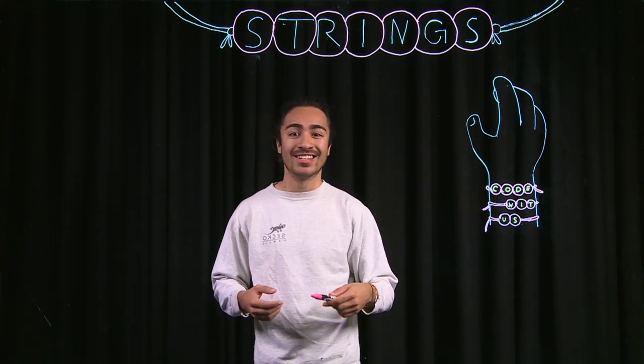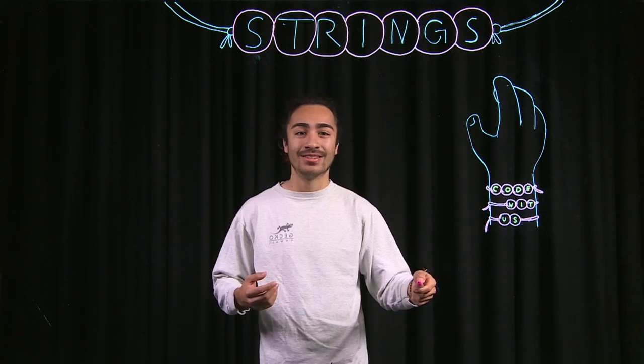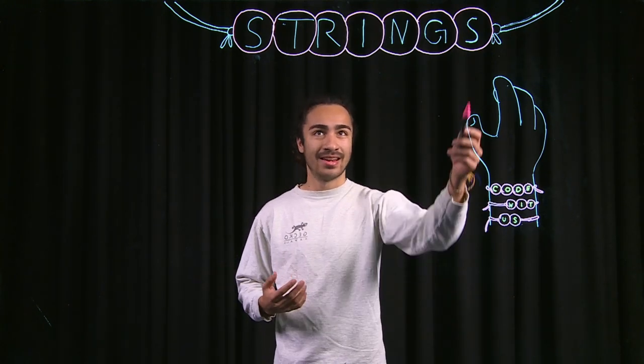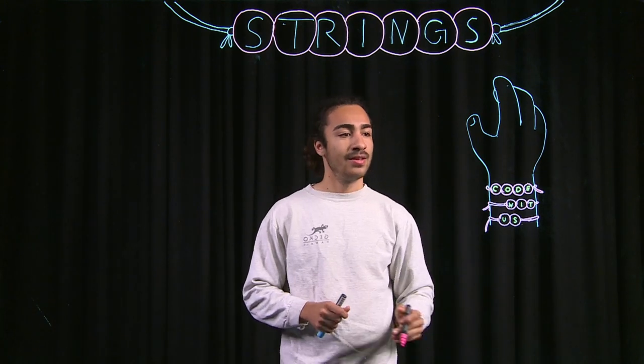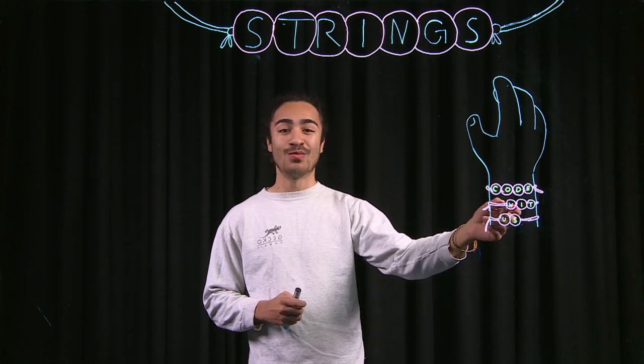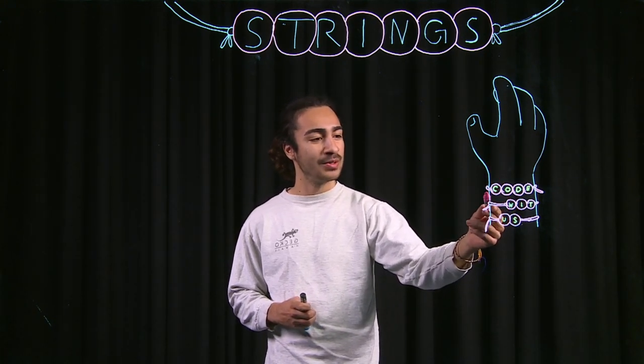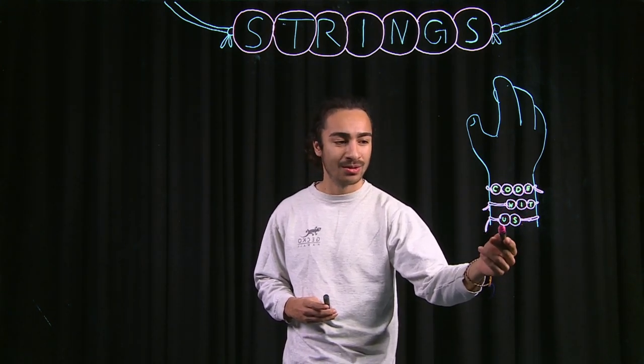Java makes strings by just connecting all those characters together in a line like how I did here with strings. So this person here has three bracelets and the first one is code, second one is with, and third one is us.